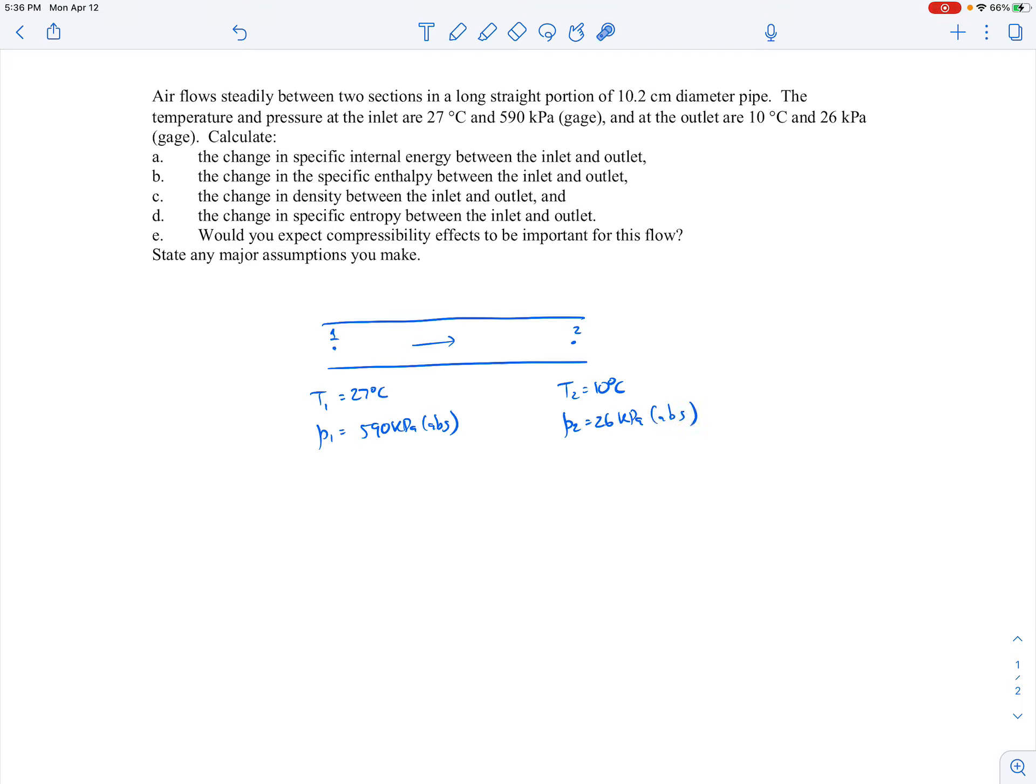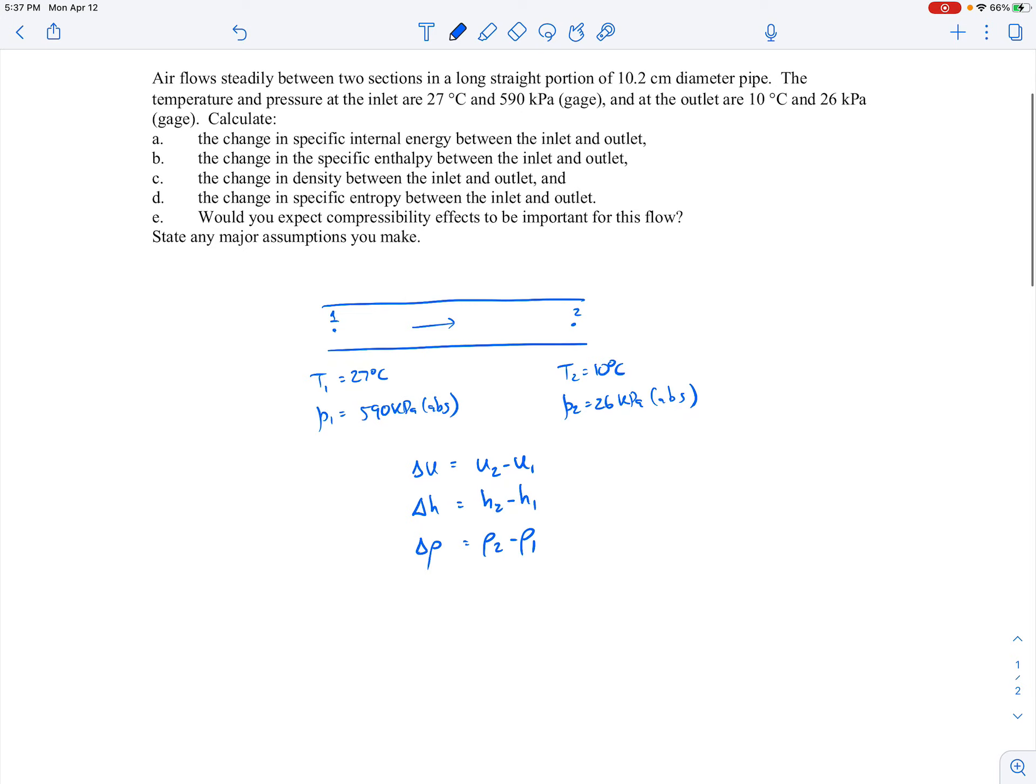We're asked to calculate the change in specific internal energy, so that means we're going to calculate delta U, which would be U2 minus U1. The change in the specific enthalpy between the inlet and outlet, so that would be delta H, H2 minus H1. The change in the density between the inlet and outlet, delta rho. And the change in specific entropy between the inlet and outlet, so delta S, that would be S2 minus S1. And would you expect compressibility effects to be important for this flow? State any major assumptions you make.